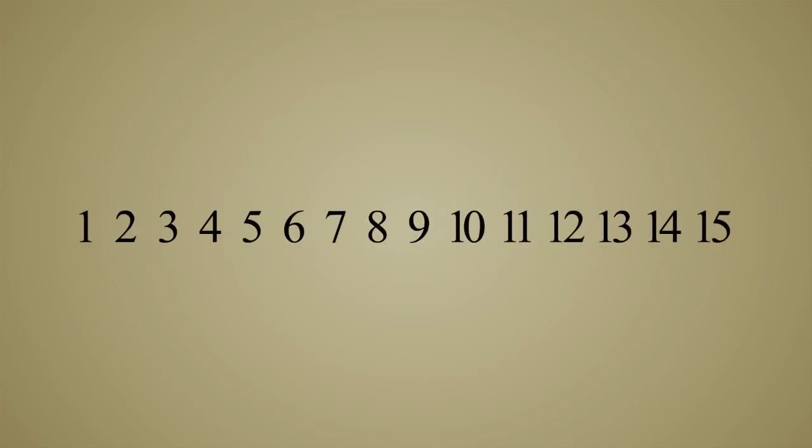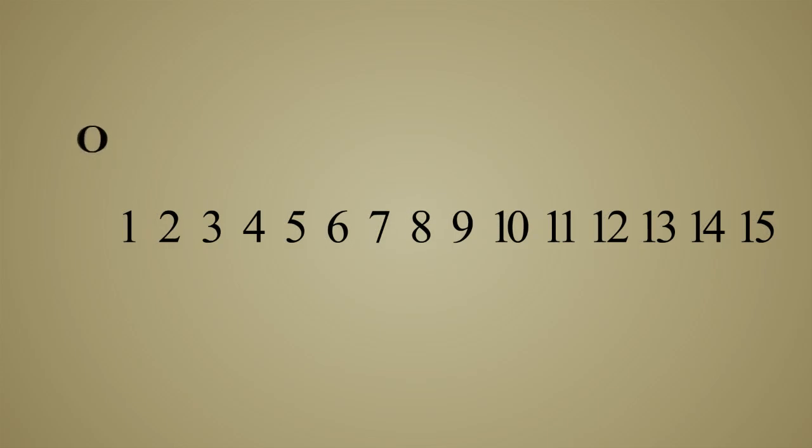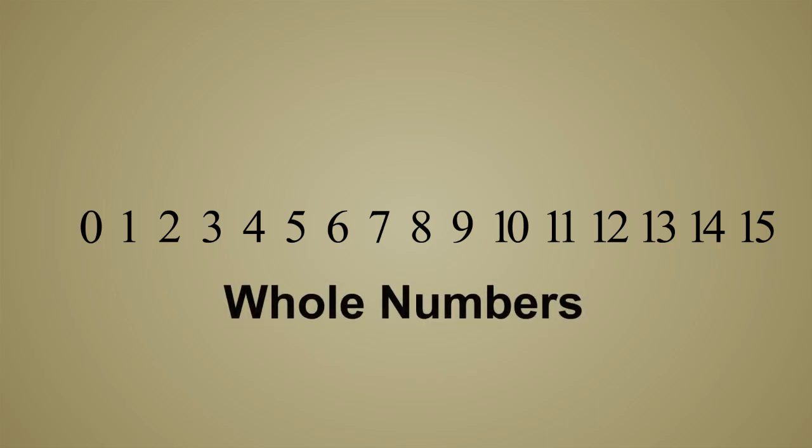At some point, people started including zero along with the natural numbers. The natural numbers plus zero became known as the whole numbers.